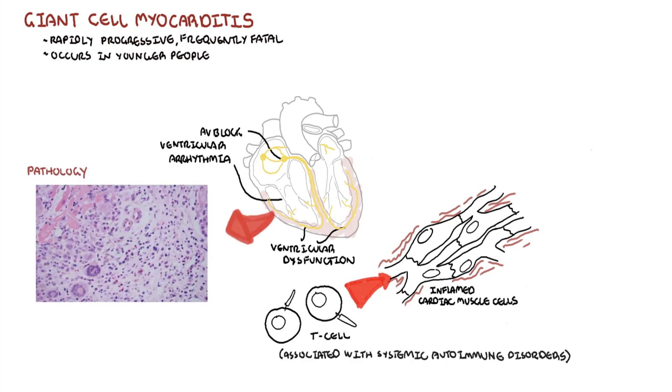A biopsy of the heart shows prominent myocyte necrosis, associated with a multifocal or diffuse inflammatory cell infiltrate composed of T cells. There is also a characteristic feature which includes multi-nucleated giant cells, hence the name Giant Cell Myocarditis.